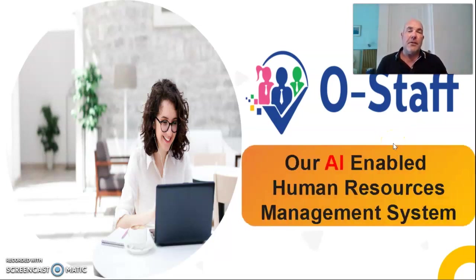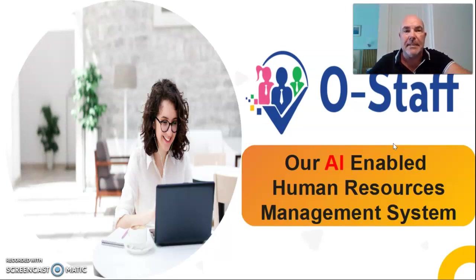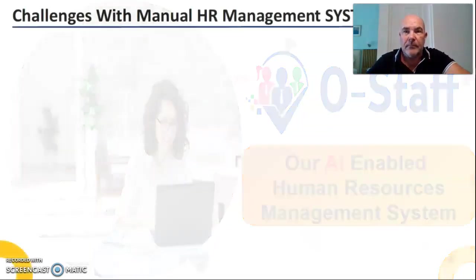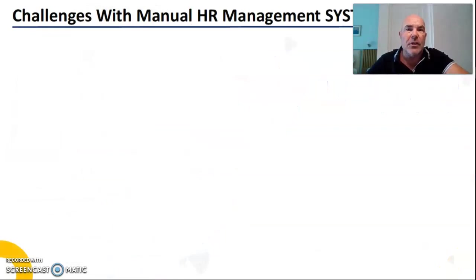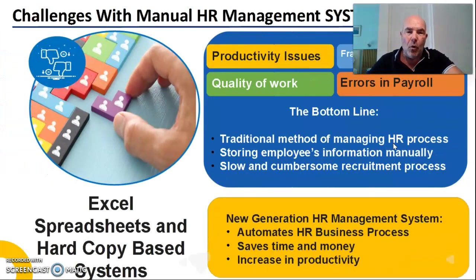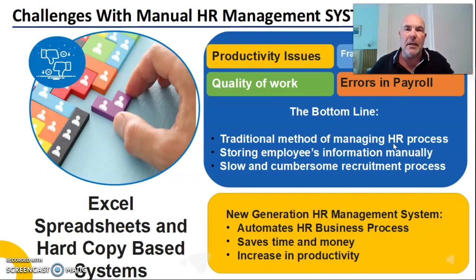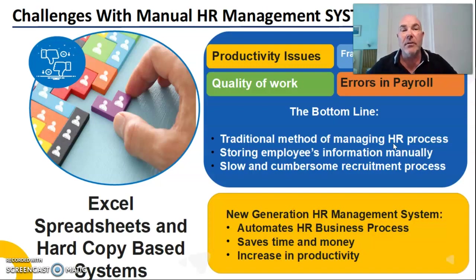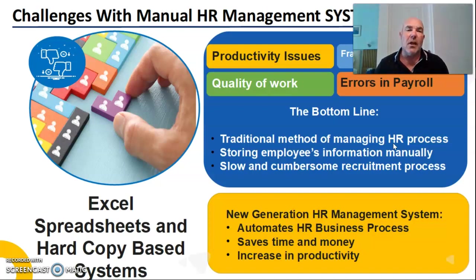OStaff is an artificial intelligence enabled human resources management system. There are always challenges with manual human resource management systems. Normally they are hard copy based, normally including Excel spreadsheets. There are always productivity issues, fraudulent activity, quality of work issues, and errors in payroll.